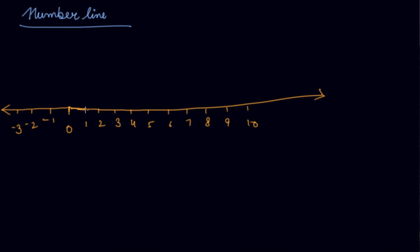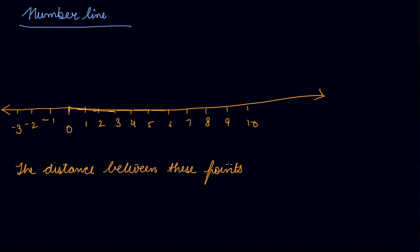The distance between 0 to 1, then 1 to 2, 2 to 3, 3 to 4, and so on — it should be equal. This distance is known as your unit distance. The distance between these points is called unit distance, and you will keep it the same.